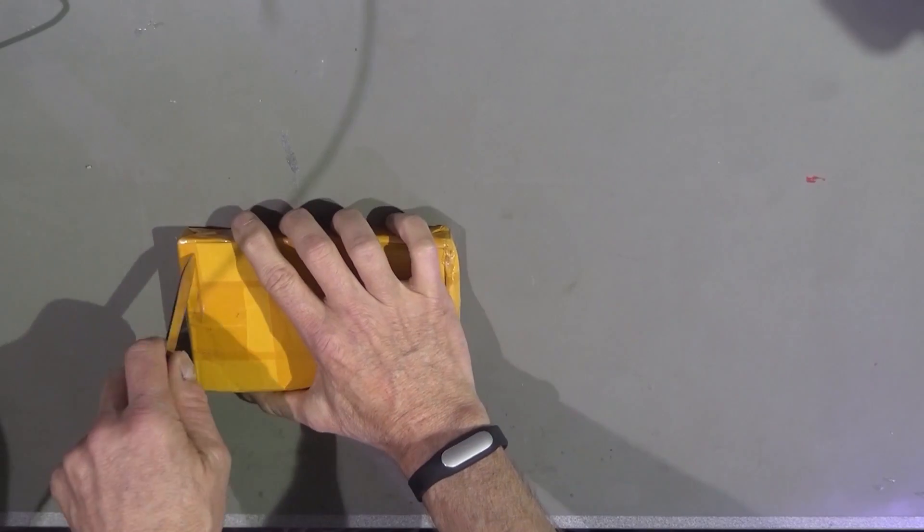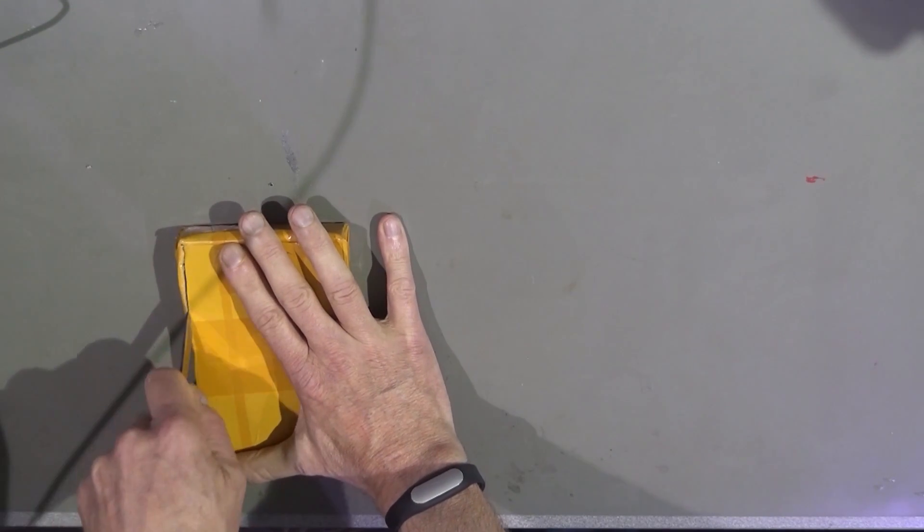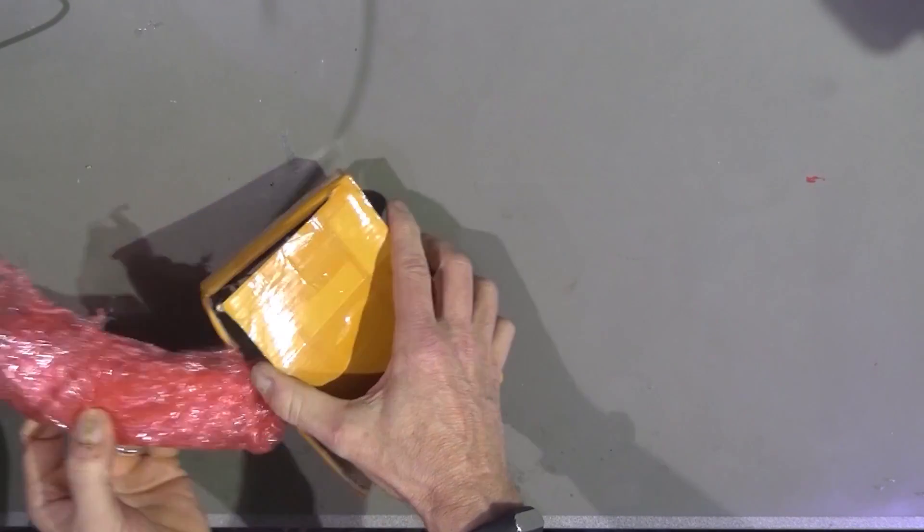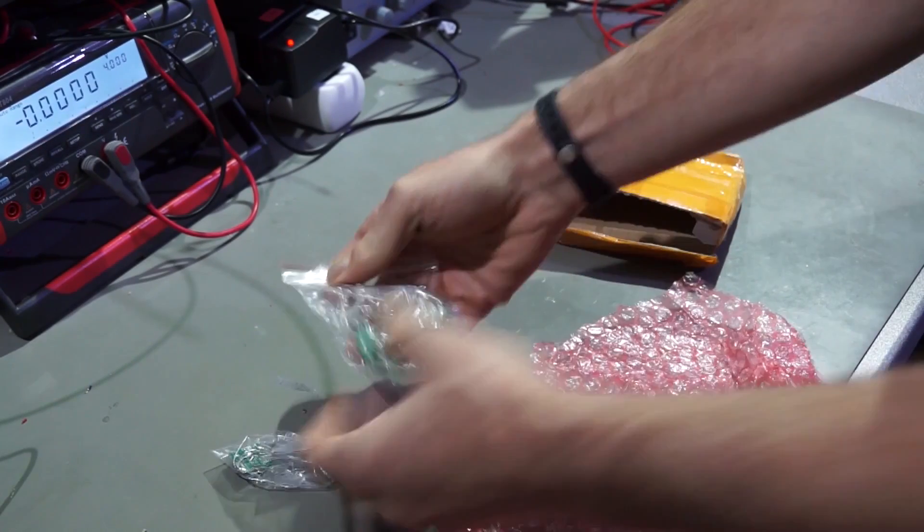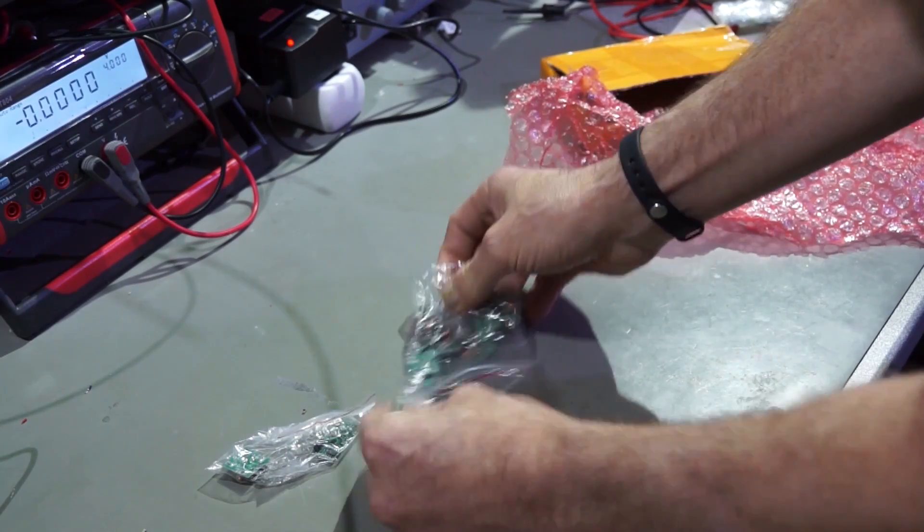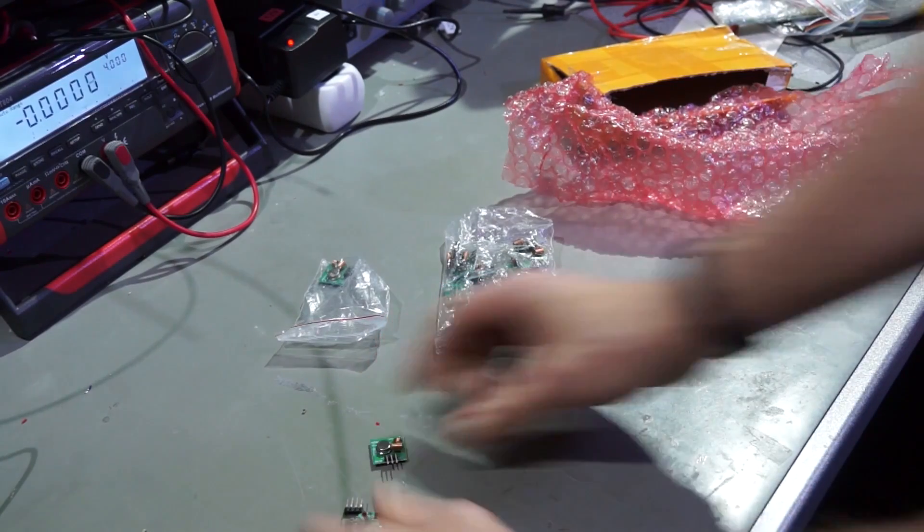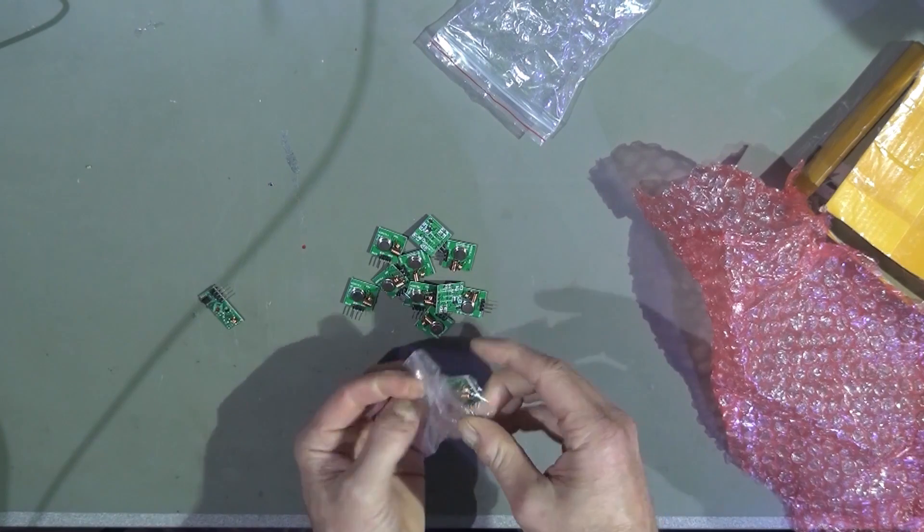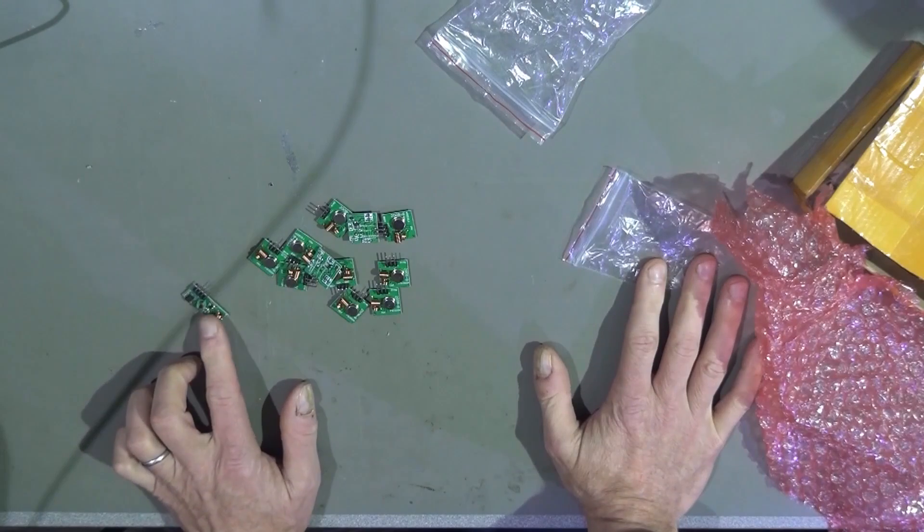Another package from China. Very well packaged. These are very cheap RF transmitters and receivers for 433 megahertz. And I got more senders than receivers. These are the senders and this is a receiver.